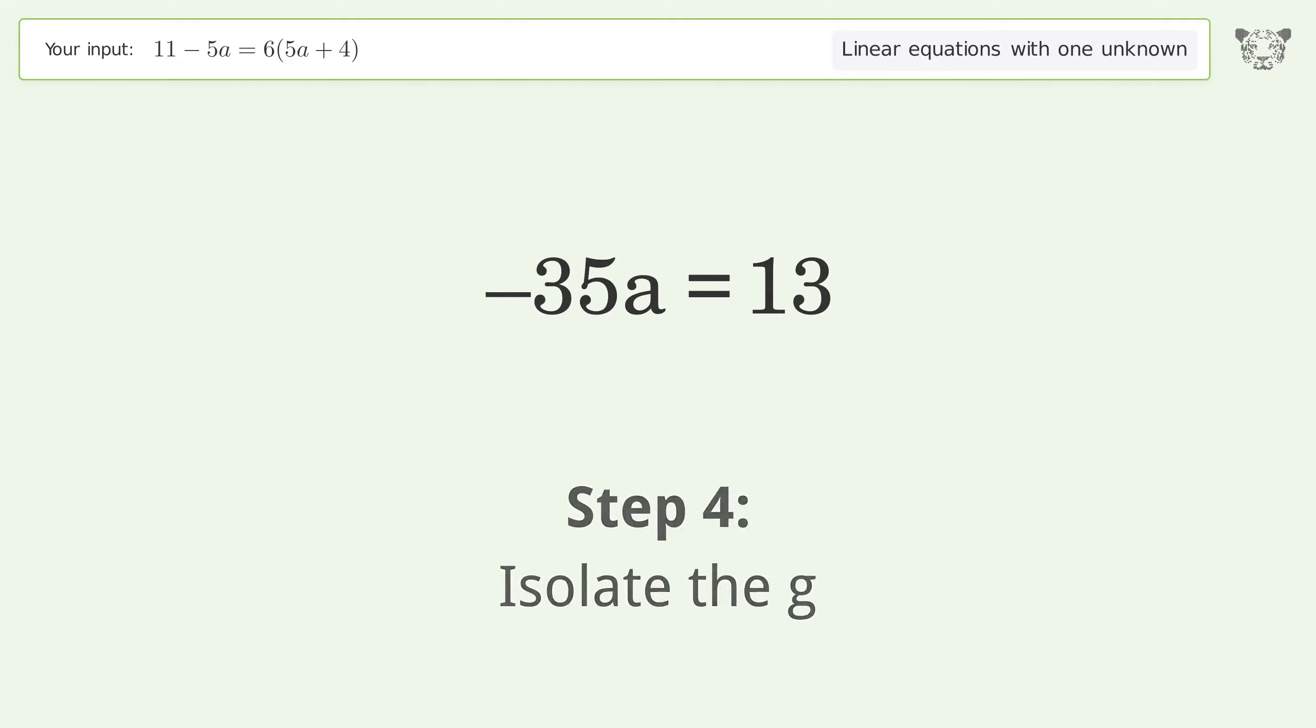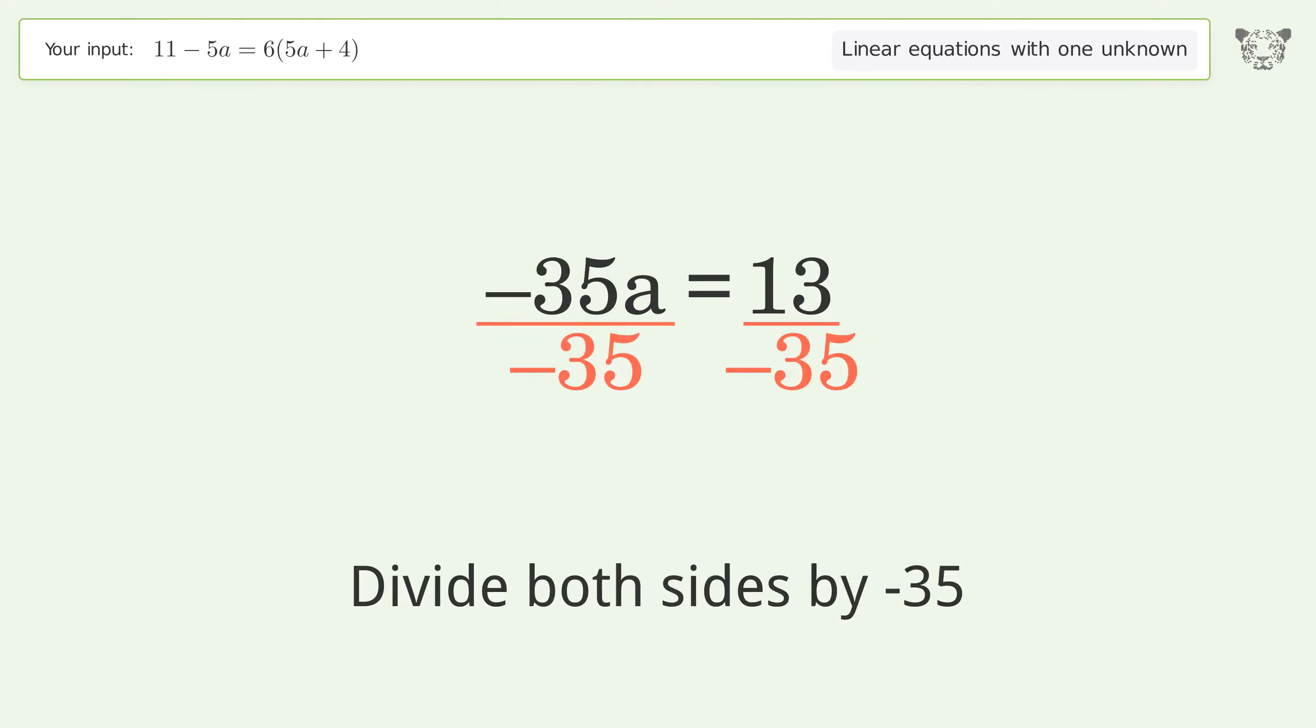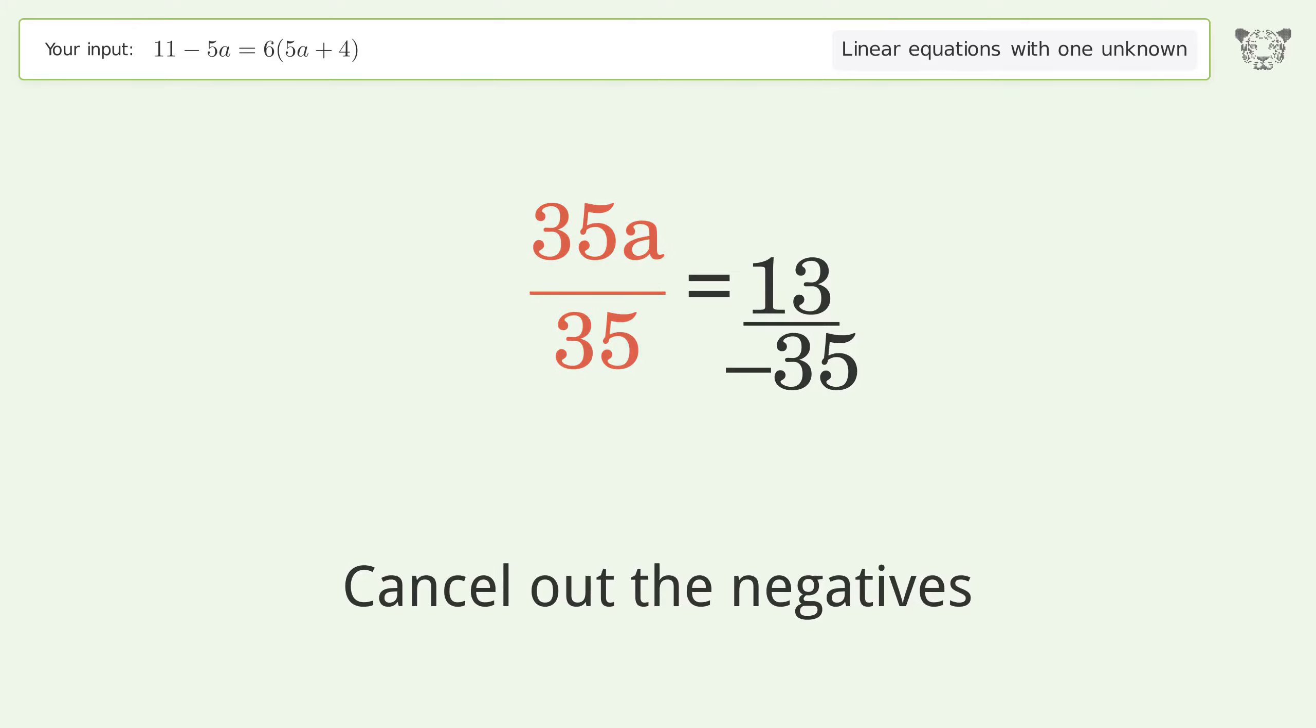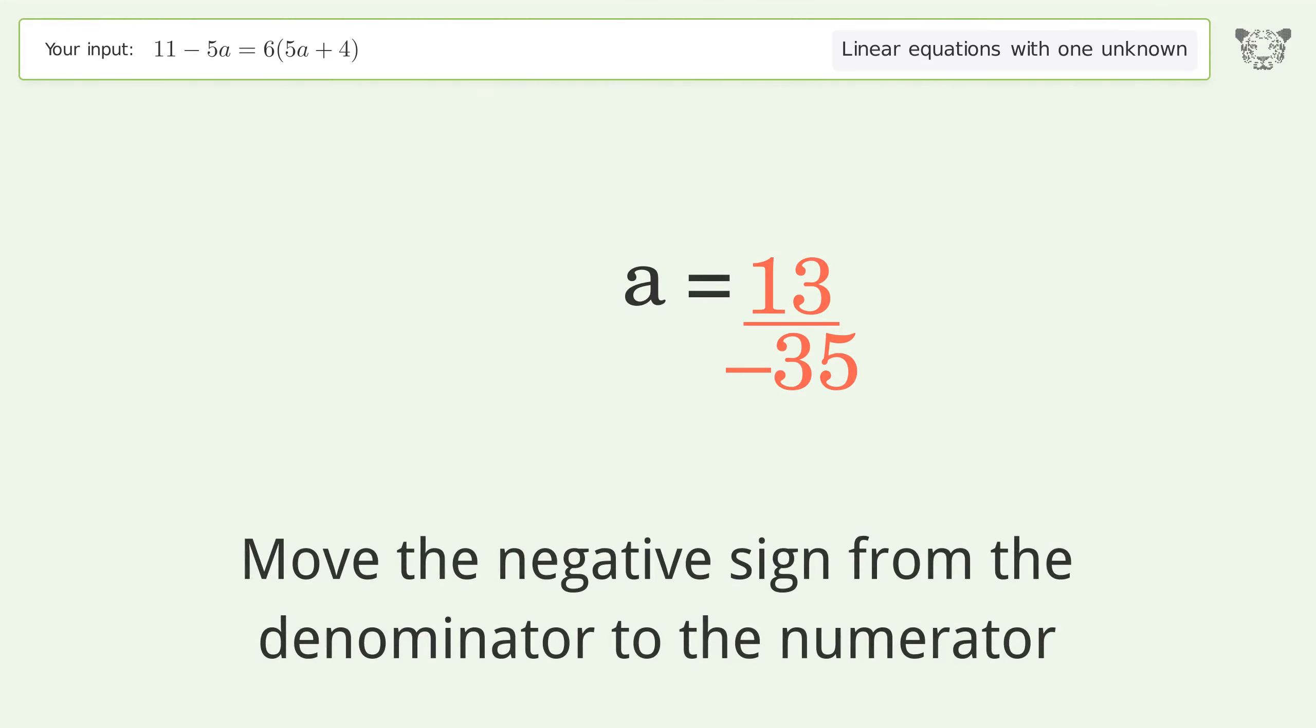Isolate the a. Divide both sides by negative 35. Cancel out the negatives. Simplify the fraction. Move the negative sign from the denominator to the numerator.